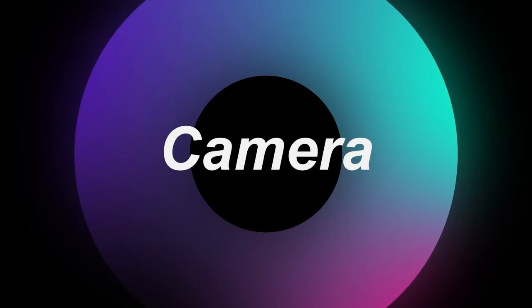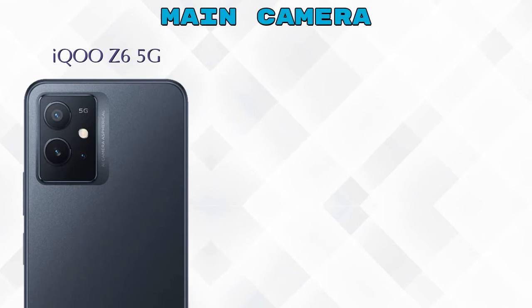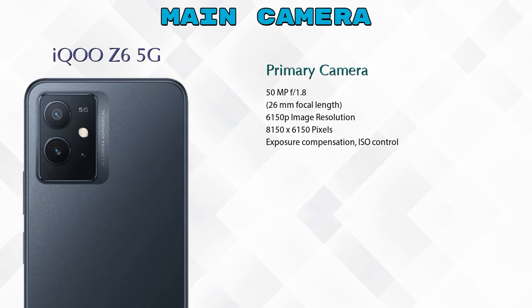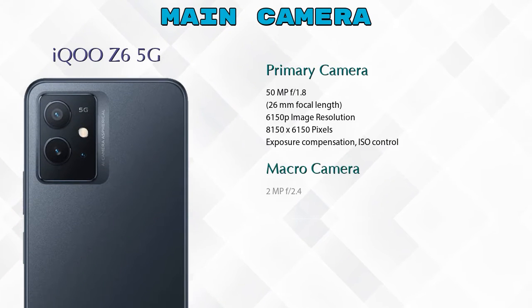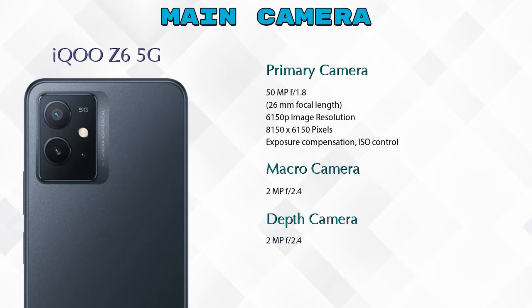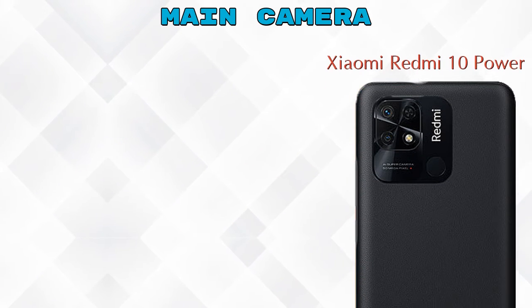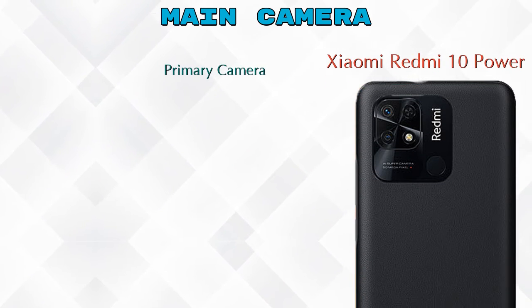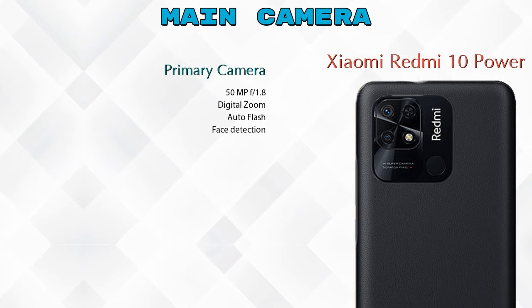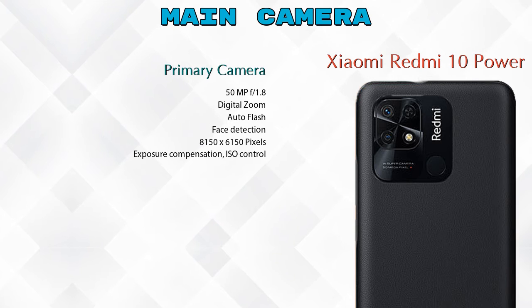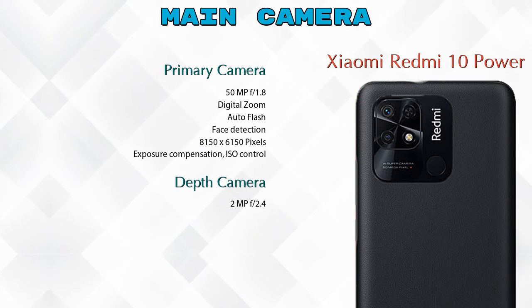Now let's talk about the camera. For the rear camera, iQOO Z6 5G has three cameras: a primary camera, a macro camera, and a depth camera. Redmi 10 Power has two cameras: a primary camera and a depth camera.